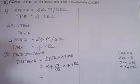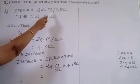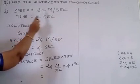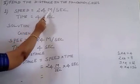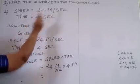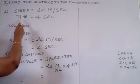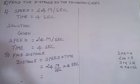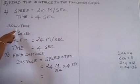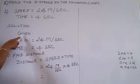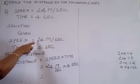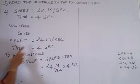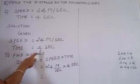Our second problem. Speed is equal to 24 m per second. The given, the speed given in meter means they should be given the time in second. The time is equal to 4 seconds. Solution. The given, speed is equal to 24 m per second and time is equal to 4 seconds.